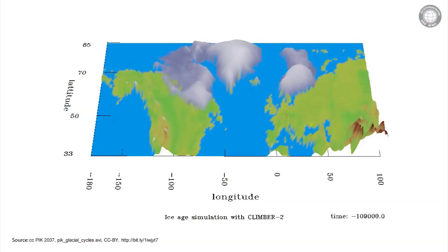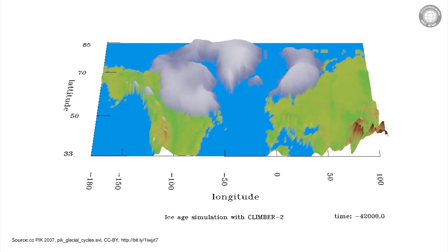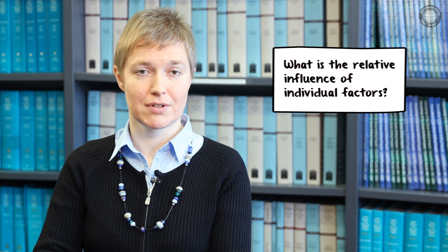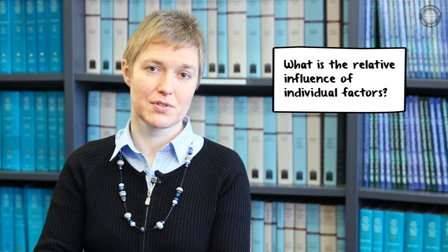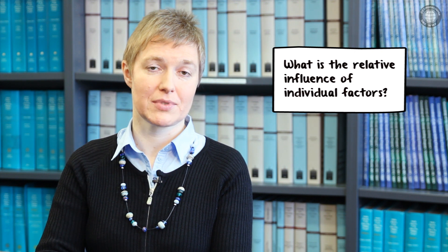If we would like to better understand what marine sediments and ice cores are telling us, we need to study the dynamics of the climate system in more detail. For this purpose, a numerical climate model is a very helpful tool. The beauty of such a climate model is that it can also include a component to simulate the extent and volume of ice sheets on continents. This gives us the opportunity to compare the results of these simulations directly with the results obtained from ice cores or marine sediments.